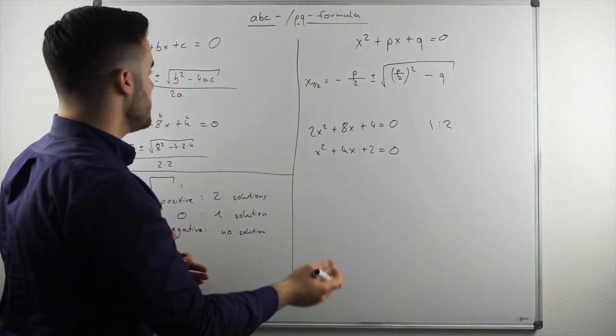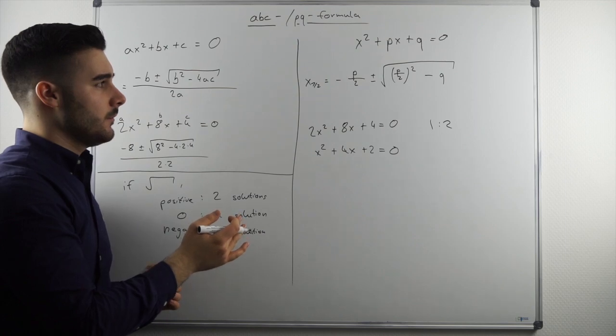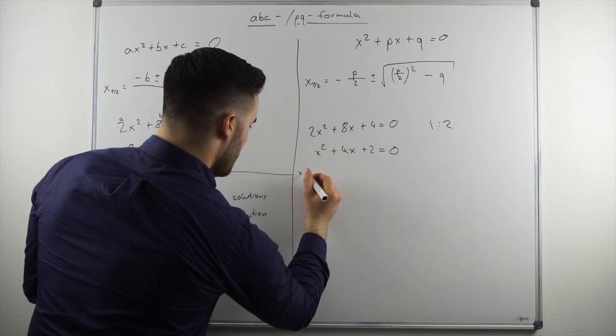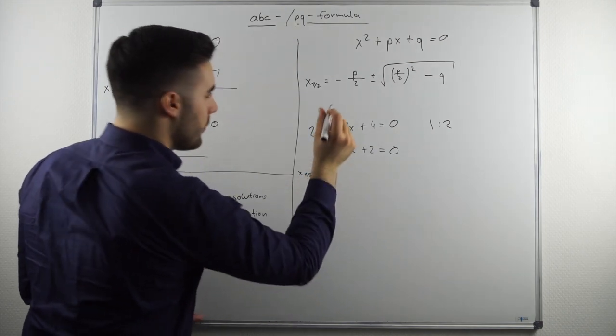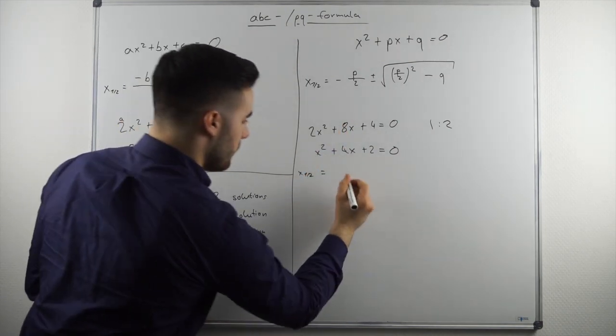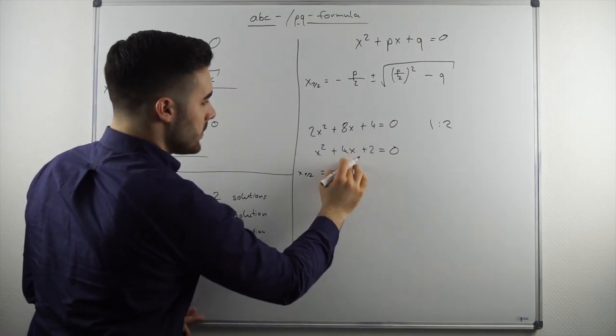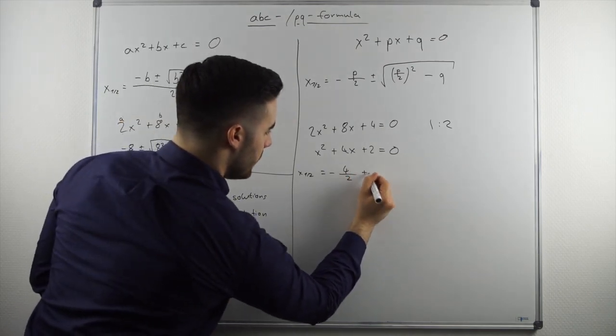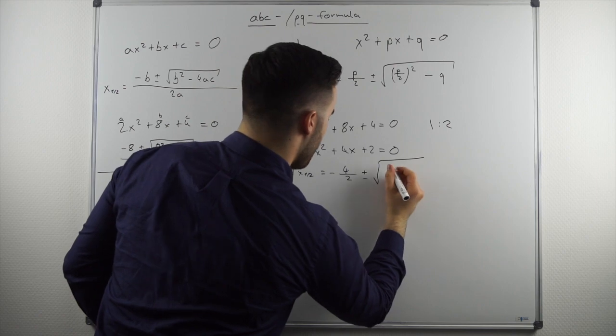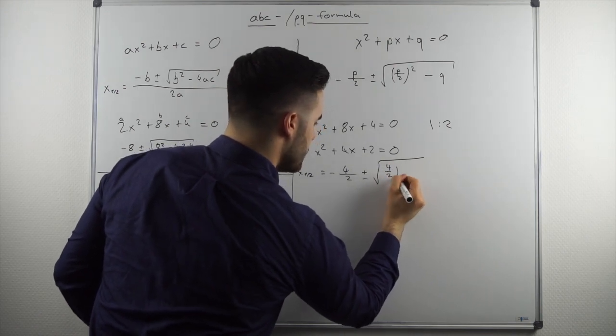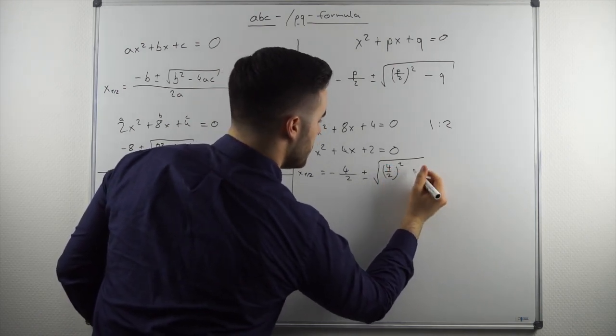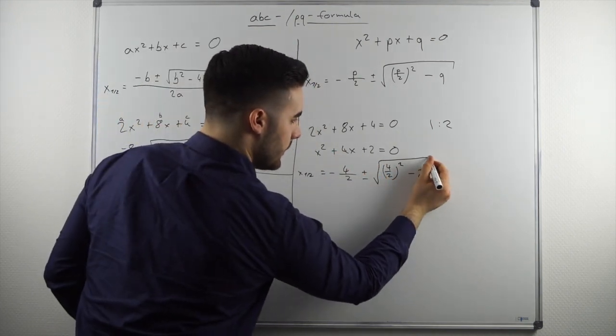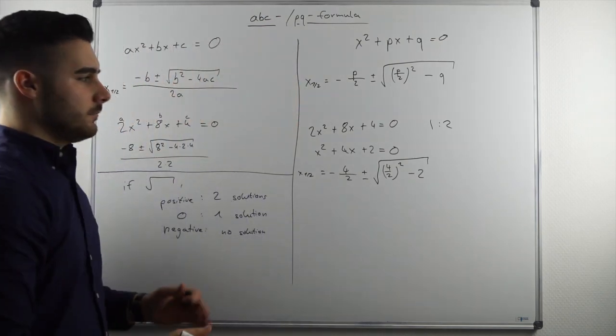And now it's like the ABC formula, just plugging it in, plugging the numbers into the formula and doing the calculation. So let's do this example now together, how the actual function would look like under the PQ formula. So we would have a minus and then four divided by two plus minus four over two squared minus. And then for the Q we have a two in the end.